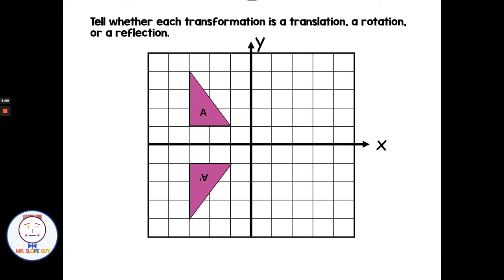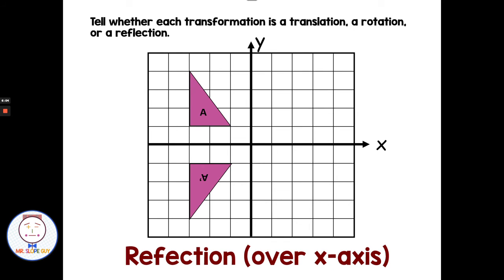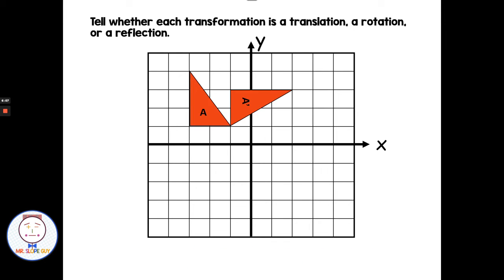How about this one? We started with A and went to A prime. It started one above the x, one below, one above the x, one below — so it looks like a reflection, in this case reflected over the x-axis. This one, from A to A prime, looks like it has just been spun or turned around a specific point — an example of a rotation. You can see this horizontal line is flipped to vertical, and the vertical line has been flipped to horizontal — it's all been turned around that point of rotation.